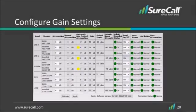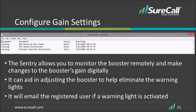We'll now take a look at the gain configuration properties of the Sentry remote monitoring system. The Sentry allows you to monitor the booster remotely and make changes to the booster's gain digitally. It can aid in adjusting the booster to help eliminate the warning lights. It will also email the registered user if a warning light is activated, letting you know what light indicator has been activated, such as oscillation in the system, an overpowering incoming signal, or over-attenuation resulting in the band shutting off.